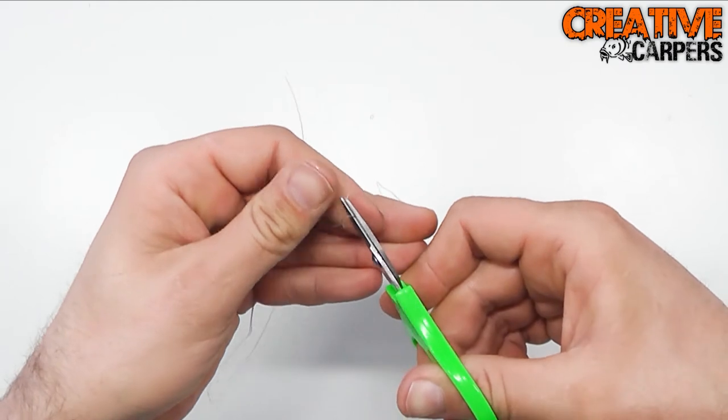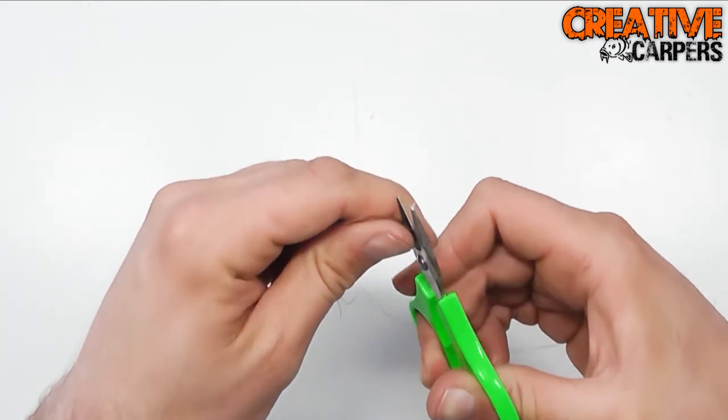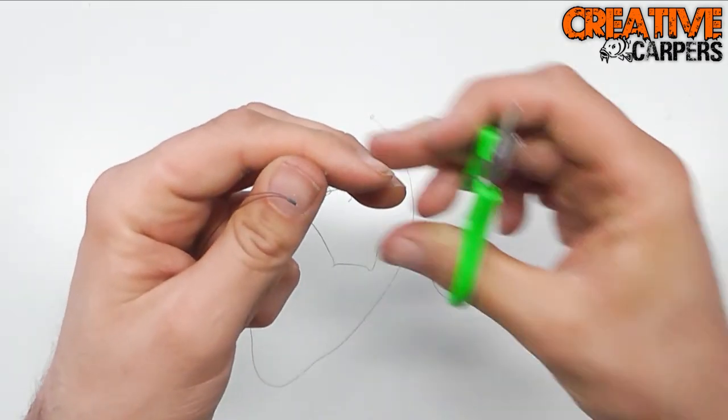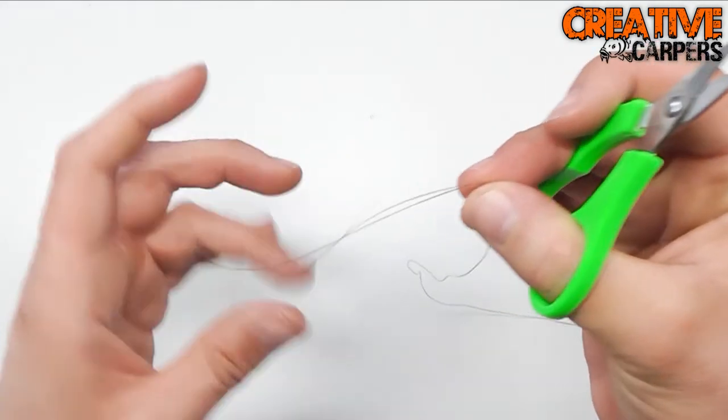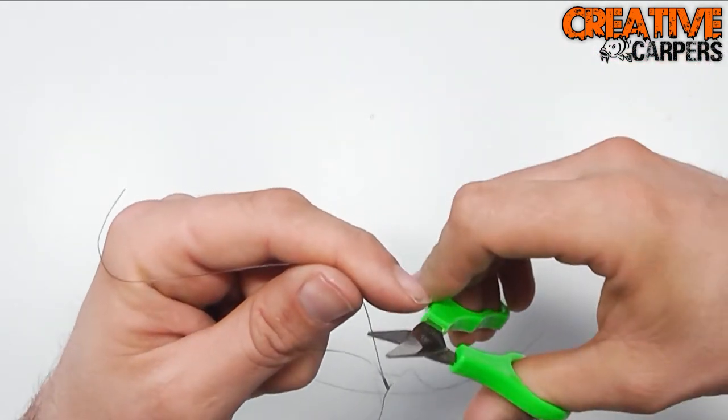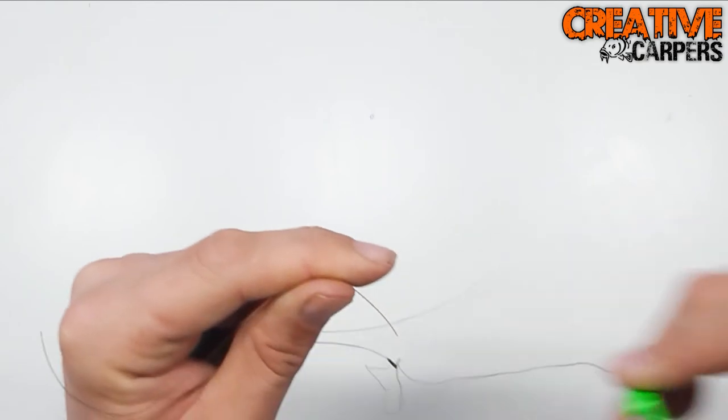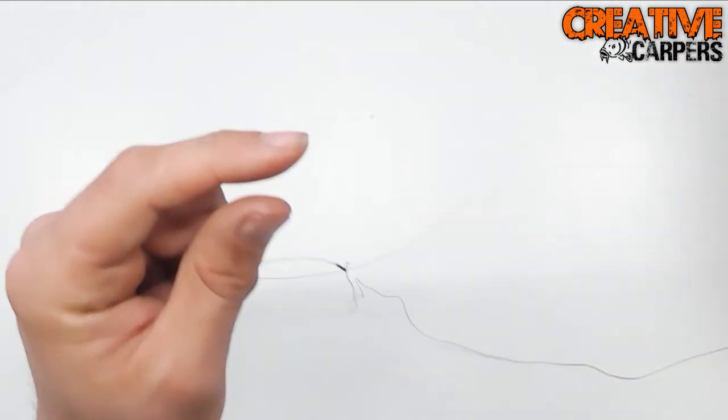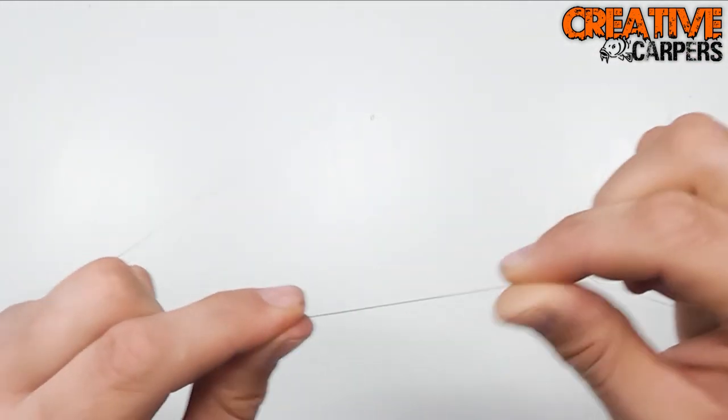Just need to take the scissors, trim off the unwanted tag ends. There's one, and here's the second one. And there, that's the Albright knot.